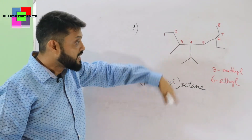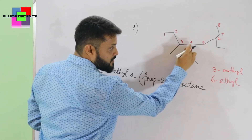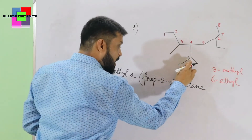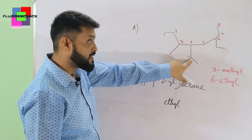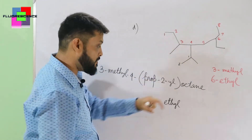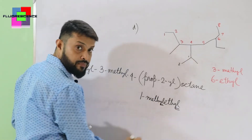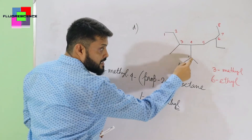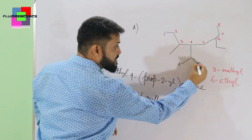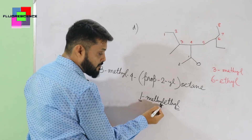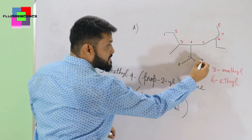Moving to the second process: from position four, the longest chain coming out has two carbon atoms, which means 'ethyl'. From this ethyl, at the first position, another group is coming out — that is methyl. So we have '1-methyl' on the ethyl. The longest chain coming out is ethyl, and from the first point of that ethyl, methyl is coming out.